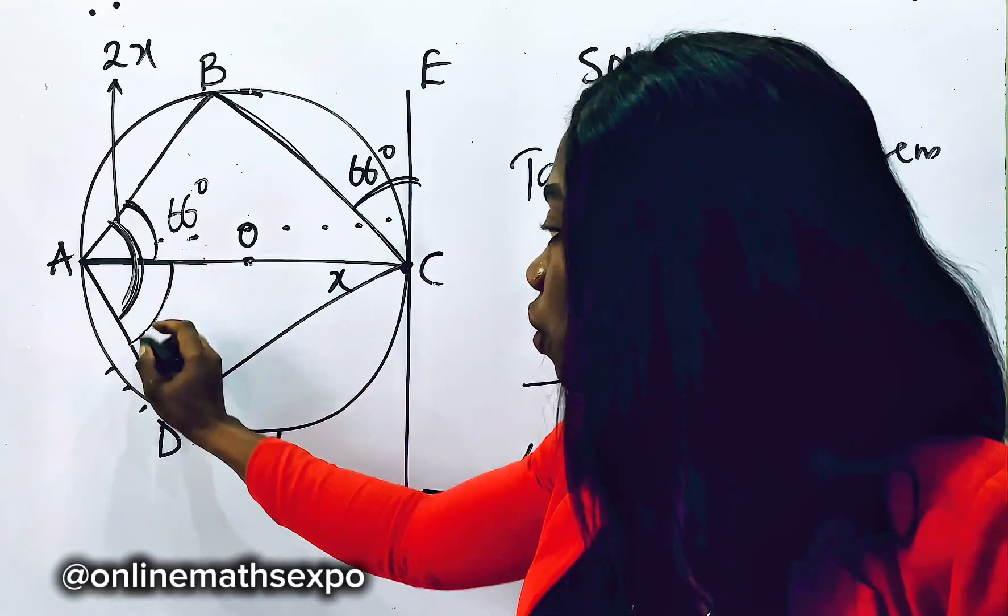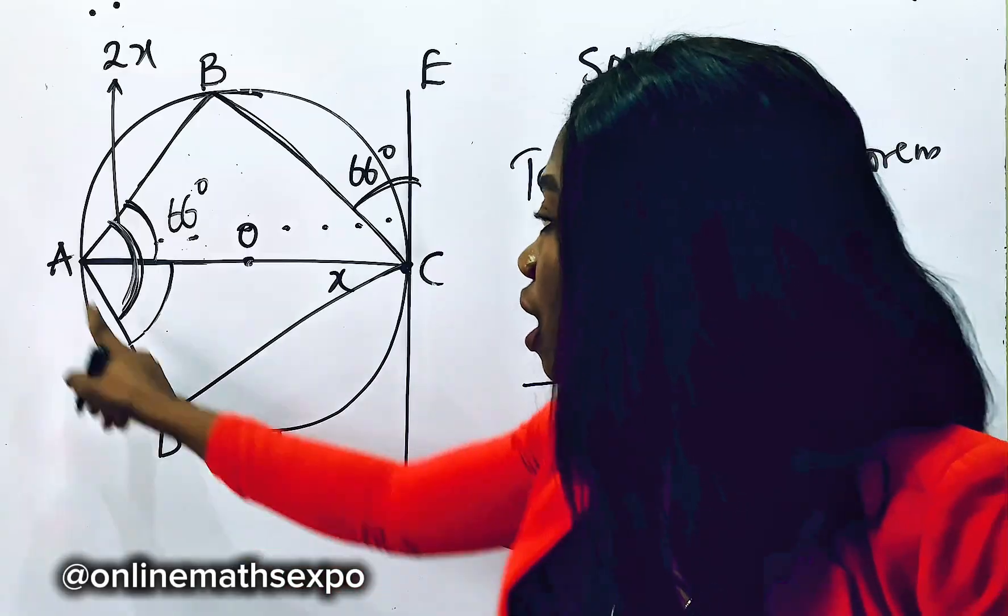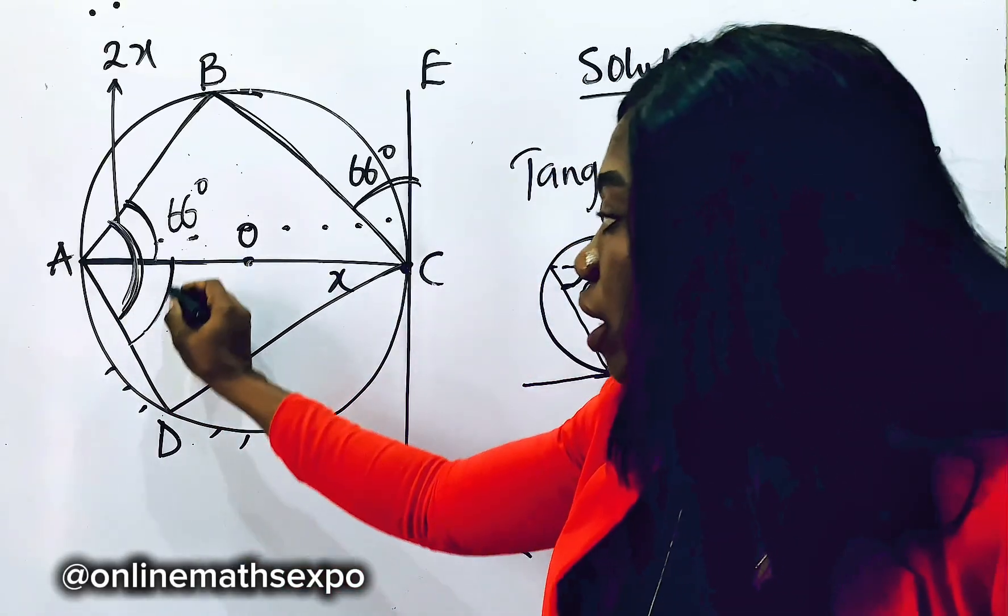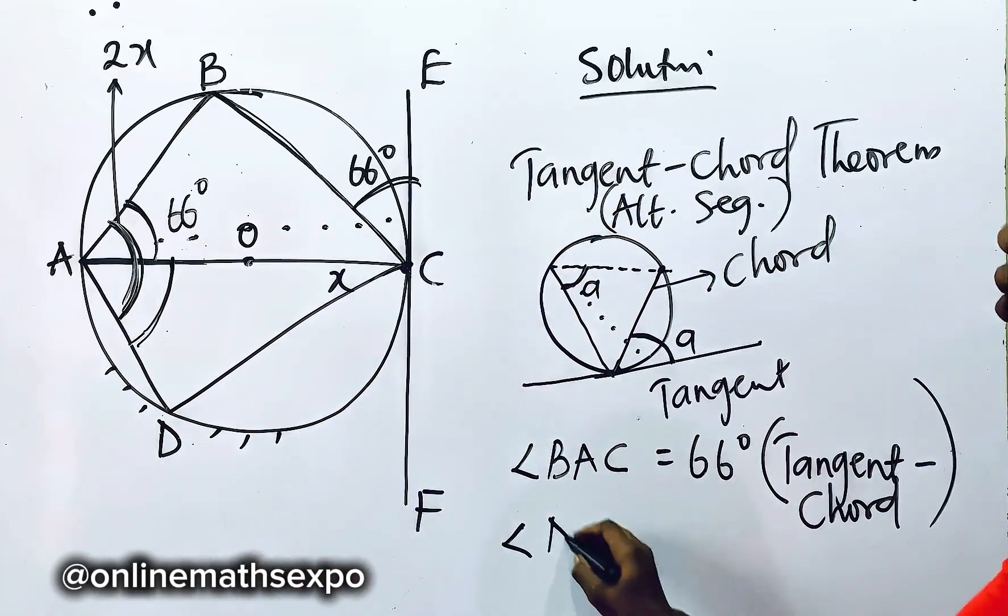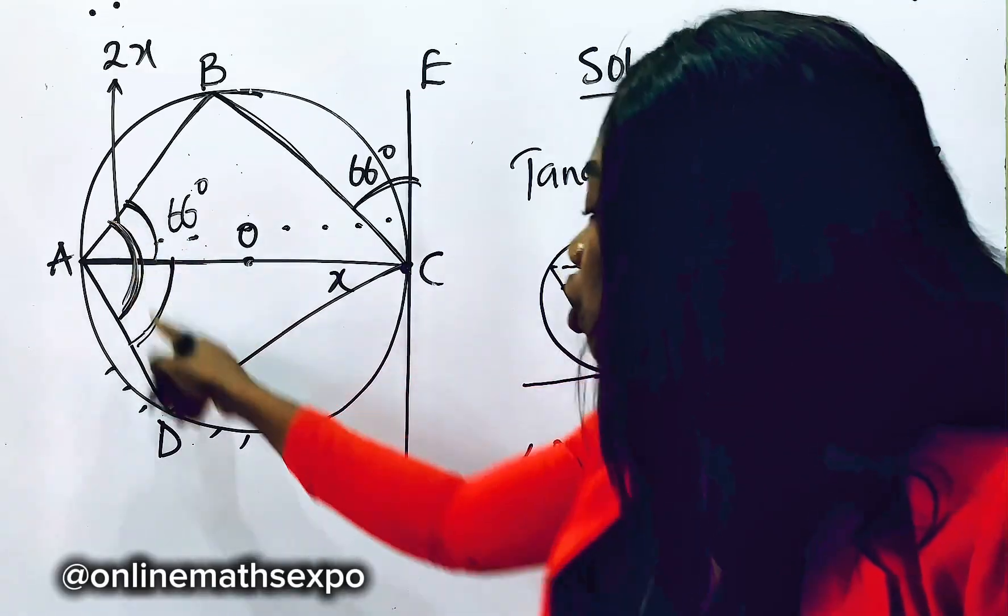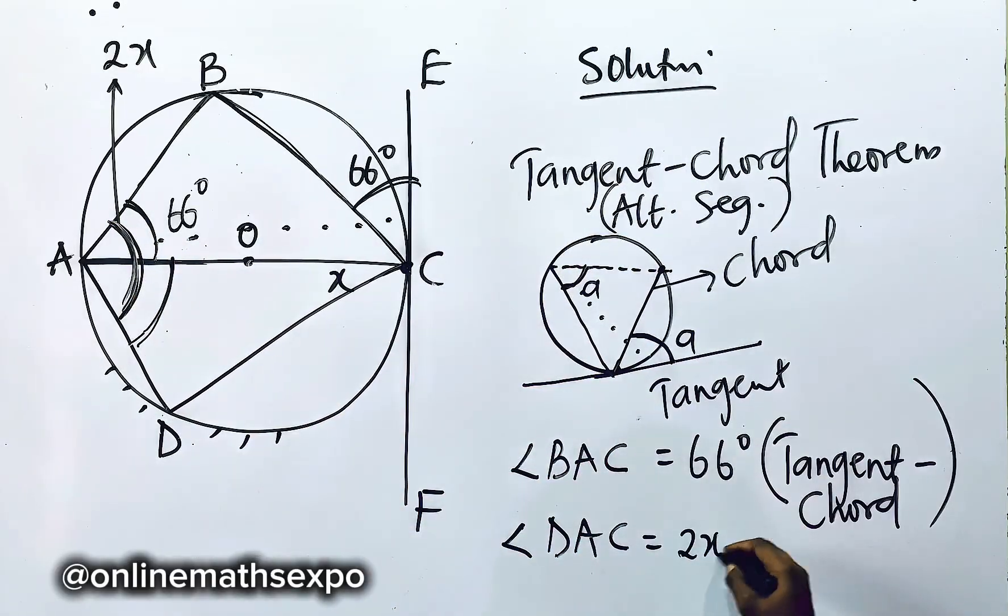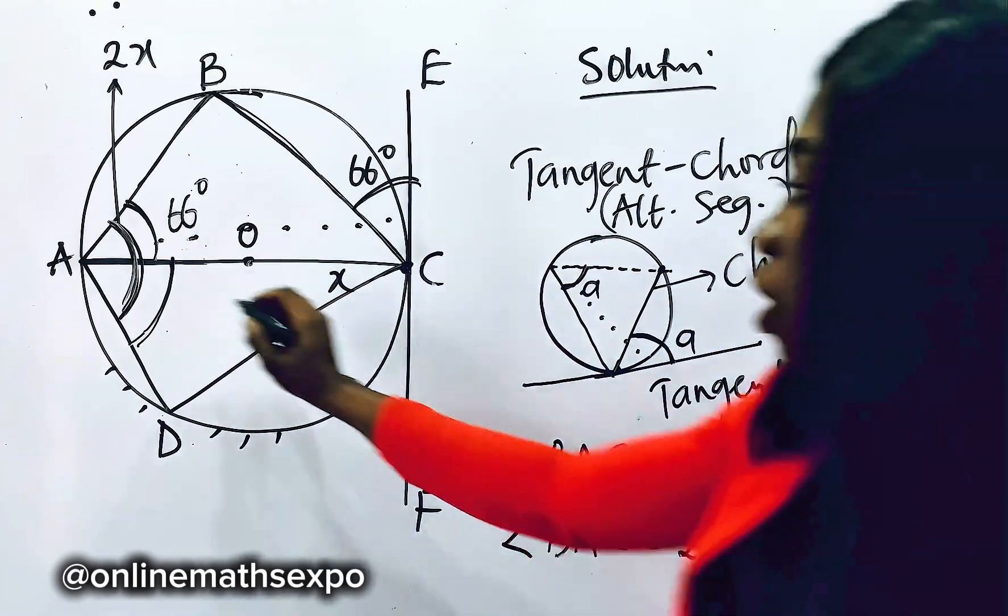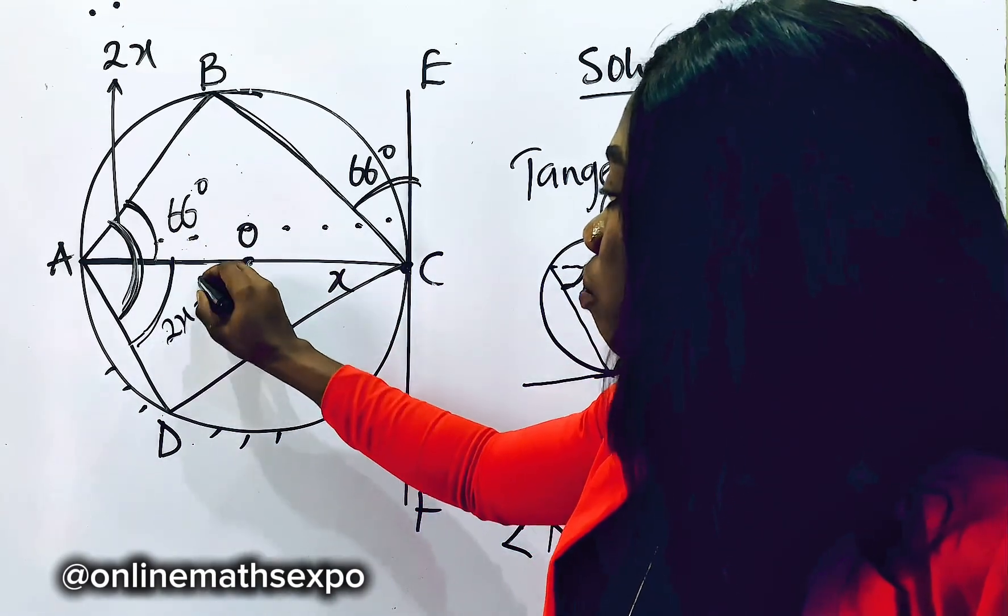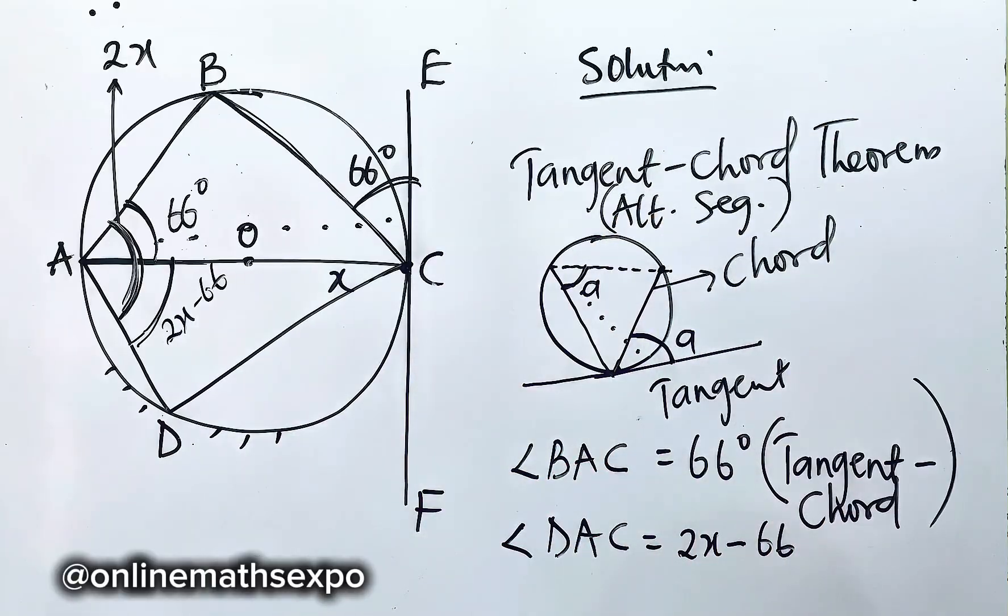So we can say angle, we want to find this part of the angle. So we name it DAC. Did you see how I named it? So it means angle DAC is going to be the total angle, which is 2x. So this place will now be 2x minus 66. What do you do next to get your x? I'm going to show you.